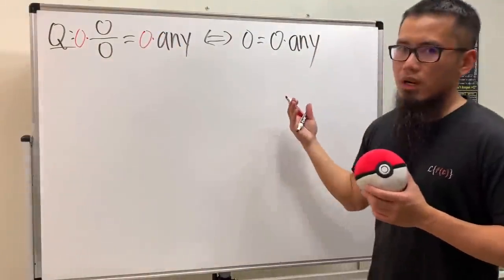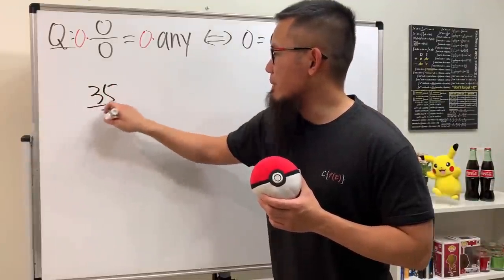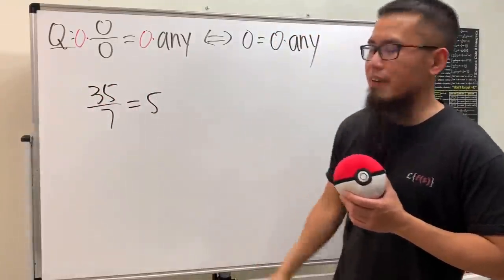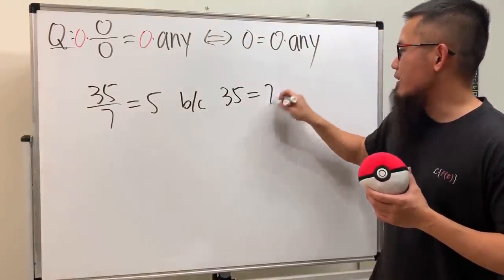When we have 35 divided by 7, of course the answer is equal to 5. Why? Because 35 is just equal to 7 times 5, done deal, we're just multiplying 7 on both sides.